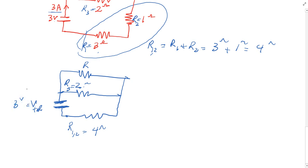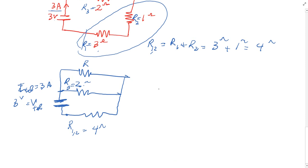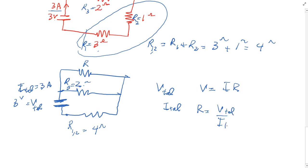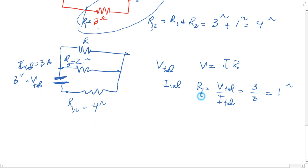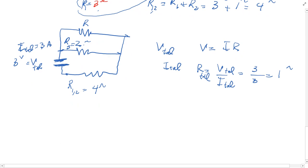Now, I have V total equal to 3 volts and I total equal to 3 amps. Using Ohm's Law — R equals V over I — I get R total equals 3 divided by 3, which equals 1 ohm. So we already know R total is 1 ohm. Now, the three resistors are arranged so that R and R3 are parallel with each other, and then that combination is in series with R1,2.